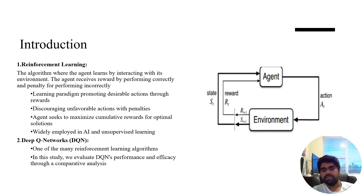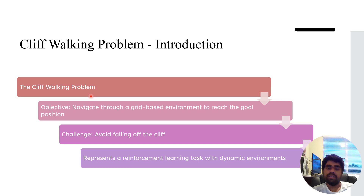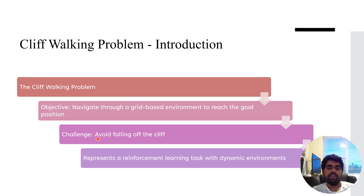This is the transition algorithm we use in reinforcement learning. Coming to my problem — it is the cliff walking problem, where the agent has to walk on a cliff, avoiding falling off either side, and make it to the goal. The challenge is to avoid falling off the cliff.